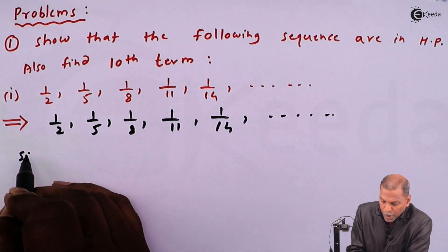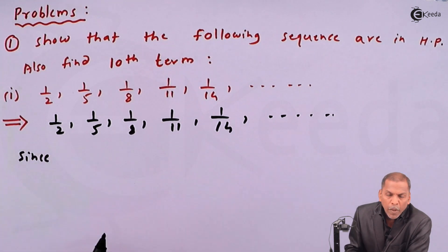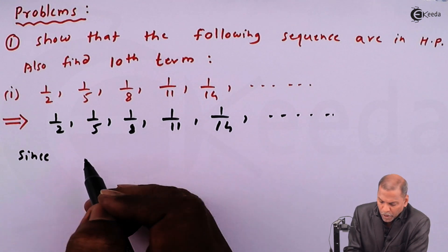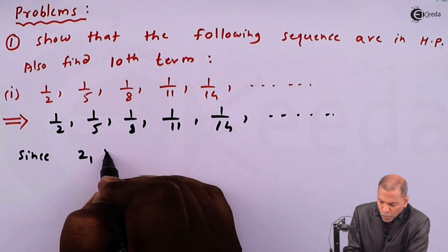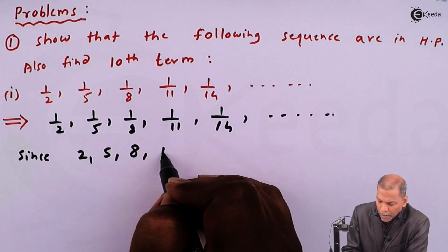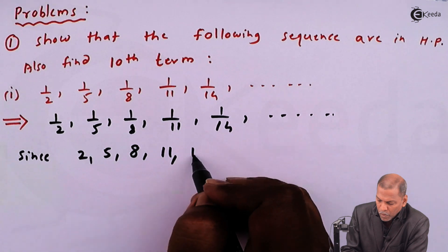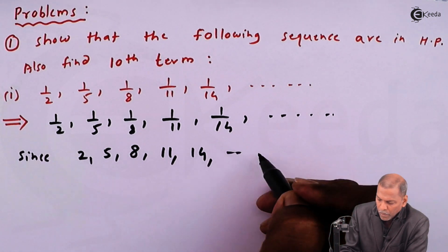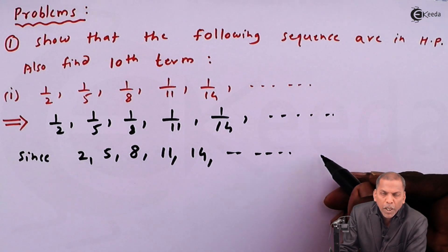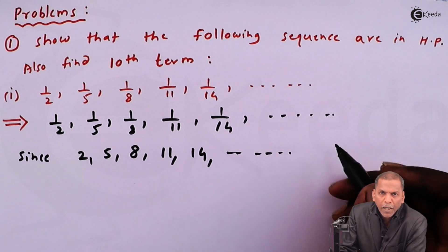Since the reciprocal of these terms, that is two, five, eight, 11, 14 going on. So if you observe, these all numbers are in AP.